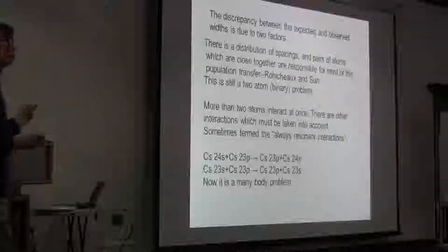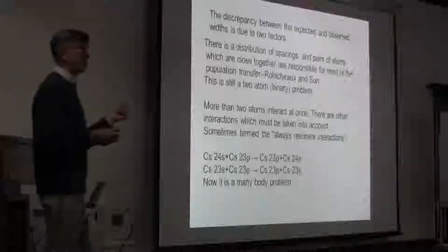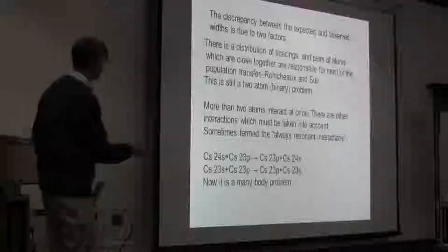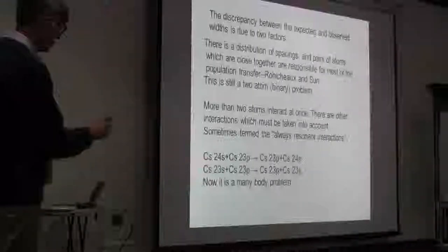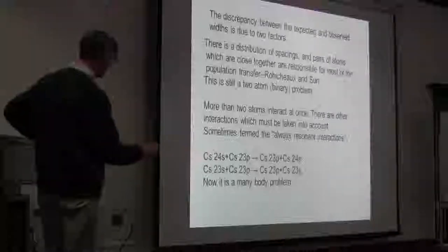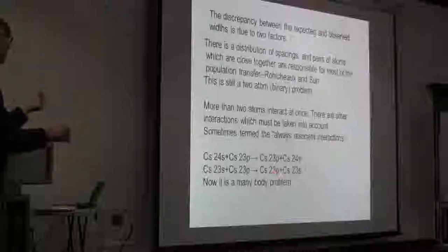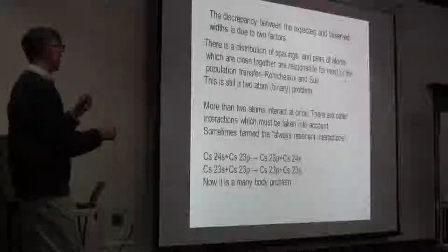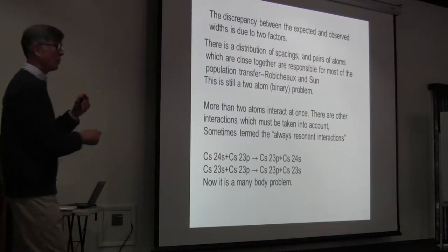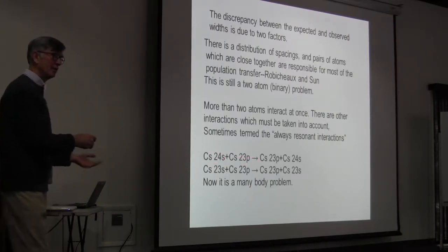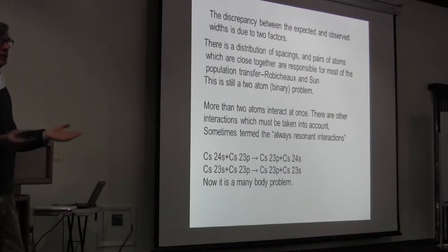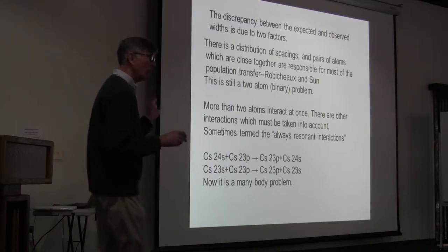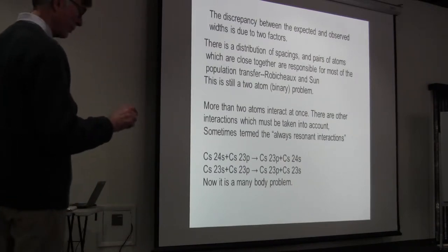It's also true that an atom may have a nearest neighbor, but its next nearest neighbor is not miles away. You have to take that into account. In this cesium problem that we considered, we started out with two atoms in the 23p state, and so we always have all of these 23 atoms. If we actually have two 23p's going to 23s and 24s, this 24s atom finds itself in the sea of these 23p atoms. This dipole-dipole exchange is always resonant. It doesn't matter whether there's a field present or not. That actually leads to some of the problem. It's not just one interaction that you have to take into account in these problems.